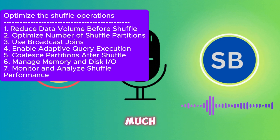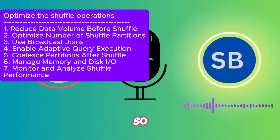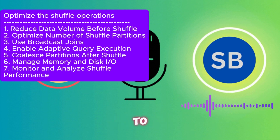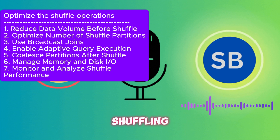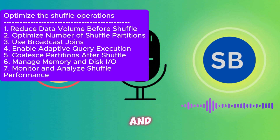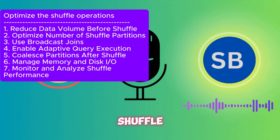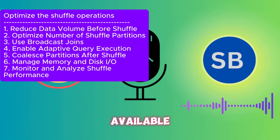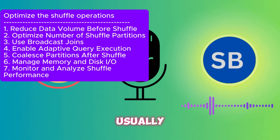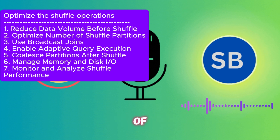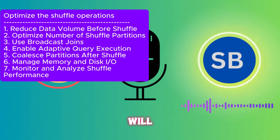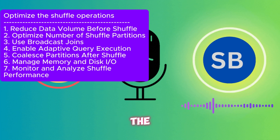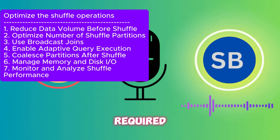We can also avoid shuffling to some level. The shuffle partition count should be set between 1x to 4x the number of available cores — typically 1x to 4x cores works well. We can also use broadcast joins for join operations, which completely eliminates the shuffling process by broadcasting the smaller dataset to all executors so the join happens locally.